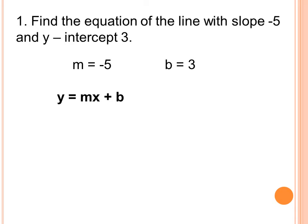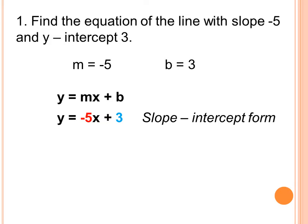So this will be y is equal to negative 5x plus 3. Why negative 5? Because that is the value of m, our slope. And why 3 at the end? Because b is equal to 3. So we just substituted here. This is our equation: y is equal to negative 5x plus 3.